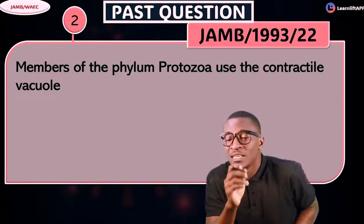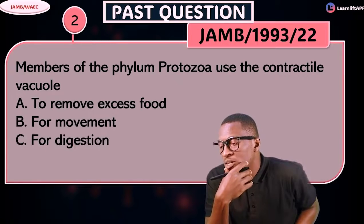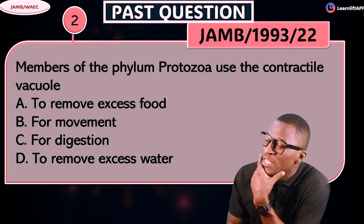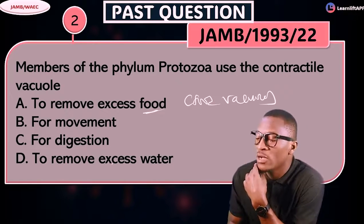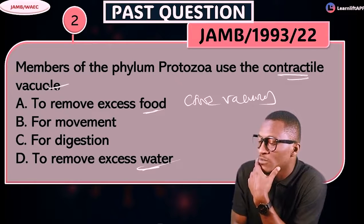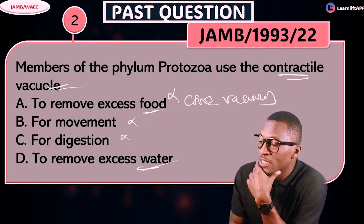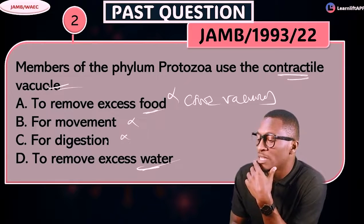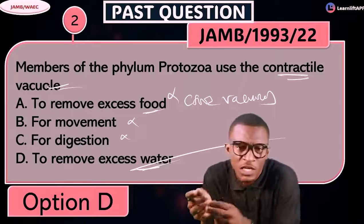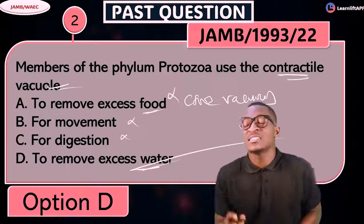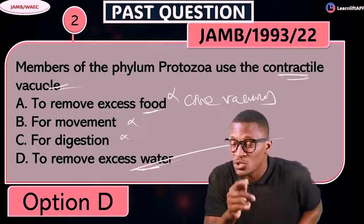JAMB 1993 Question 22: Members of the phylum Protozoa use the contractile vacuole for — A) removal of excess food, B) movement, C) digestion, D) removal of excess water. We said the contractile vacuole is used for osmoregulation, to remove excess water. So it cannot be A, B, or C. The answer is D — removal of excess water.